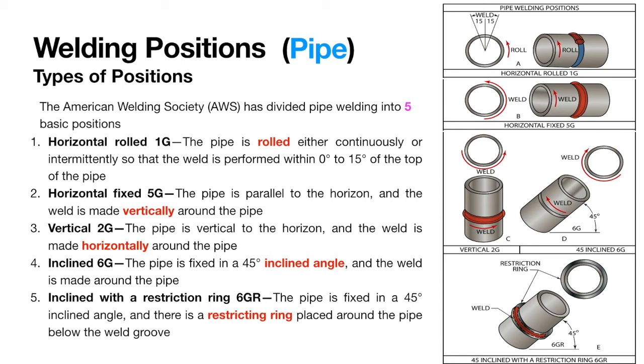In 6GR welding position, the welder is able to weld in all positions with a number of restrictions, meaning there are obstacles or restrictions to overcome.